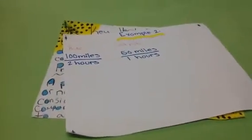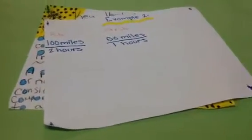Example 2. The rate is 100 miles in 2 hours. The unit rate is 50 miles in 1 hour.